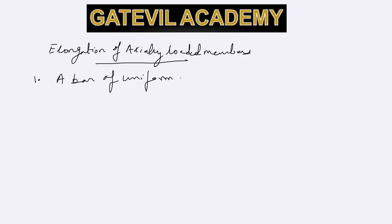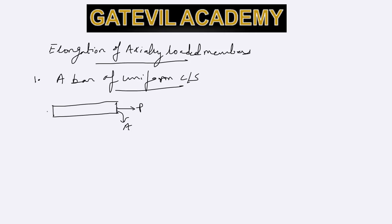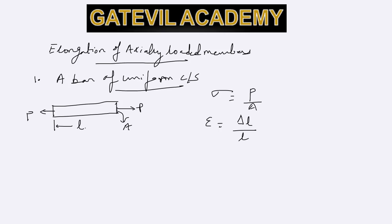First of all, we will take the most simplest case: a bar of uniform cross section. If we have a bar of uniform cross section with area A, and we have load P applied to its ends, we'll have stress equal to P by A. We'll have strain equal to change in length delta L divided by the original length L. We know that stress by strain is the modulus of elasticity or Young's modulus.